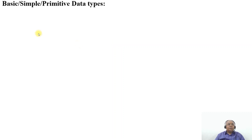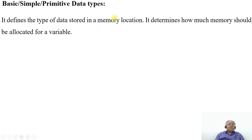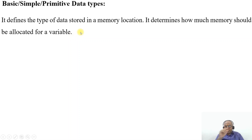In this video, we are going to talk about basic, simple and primitive data types. It defines the type of data stored in memory location. It determines how much memory should be allocated for a variable. Basically, we are talking about the data structures here.